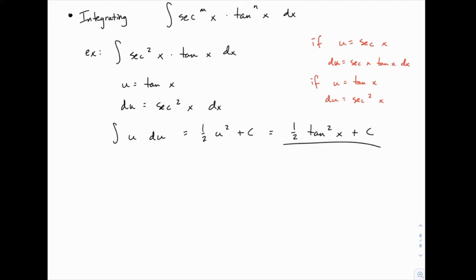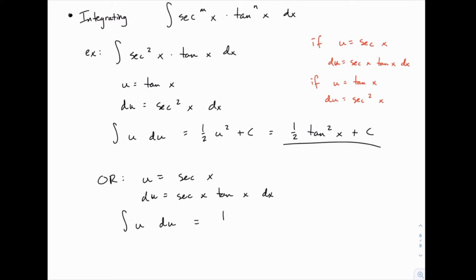It turns out there's another way to do this one. We could also define u equals secant of x. We then have secant times secant times tangent, and since du equals secant times tangent dx, the integral becomes u times du — giving us one half u squared plus c. In this case, u was secant of x, so we get one half secant squared of x plus c.